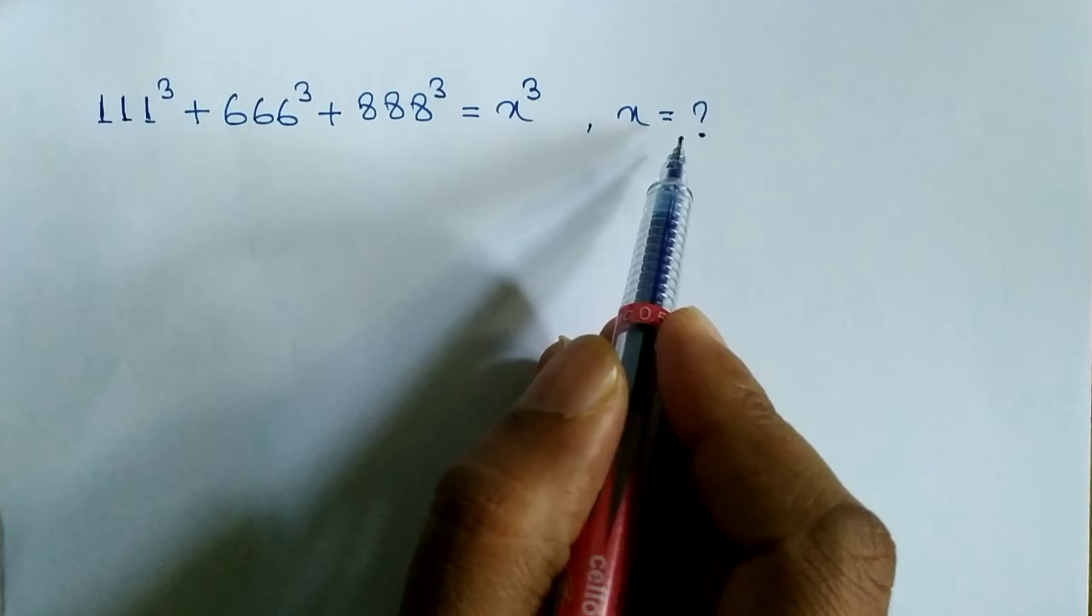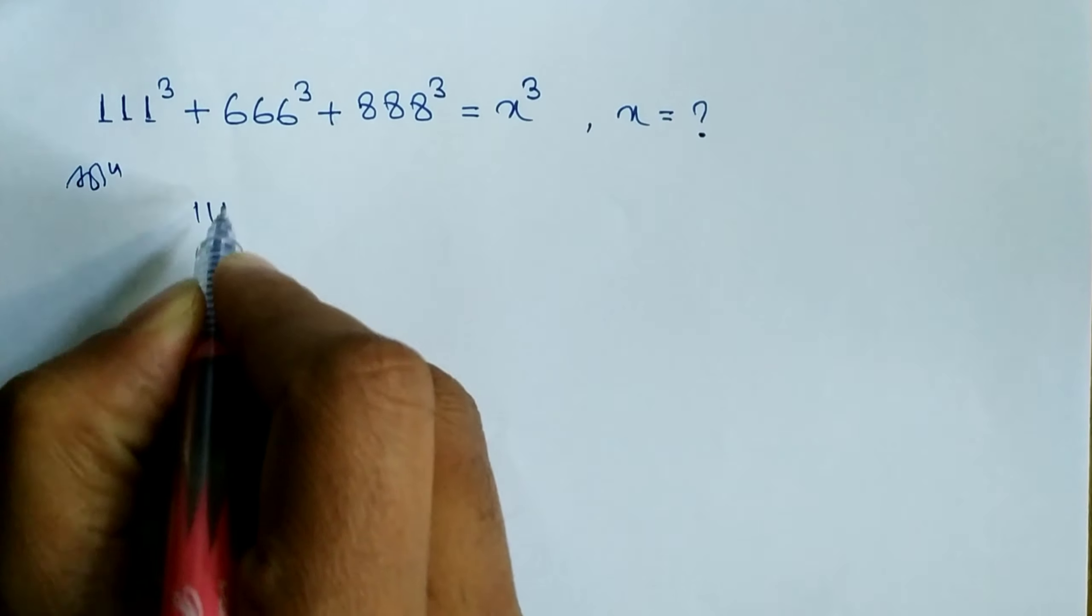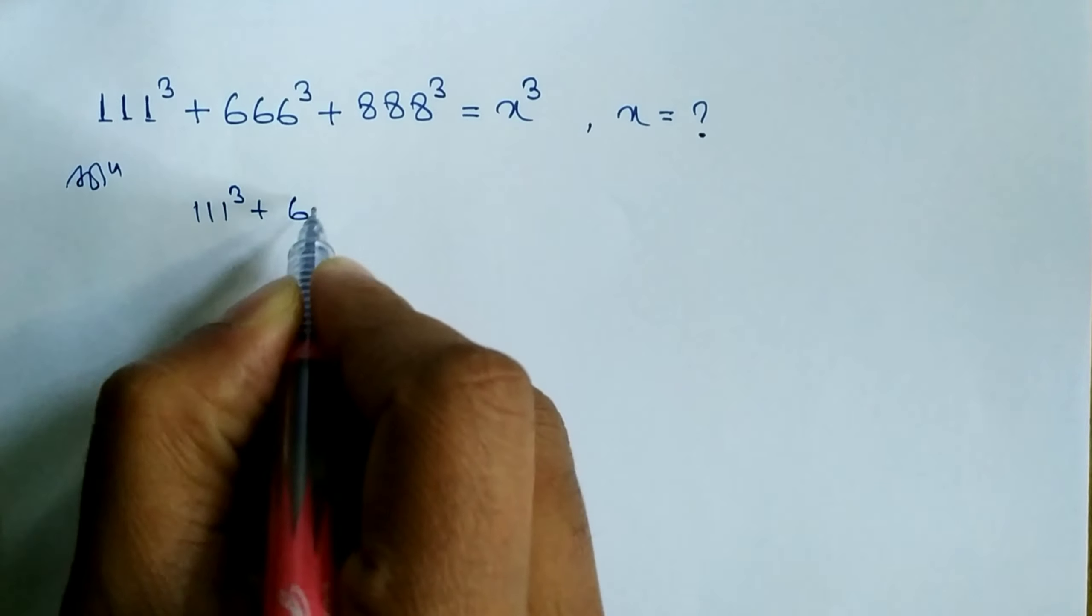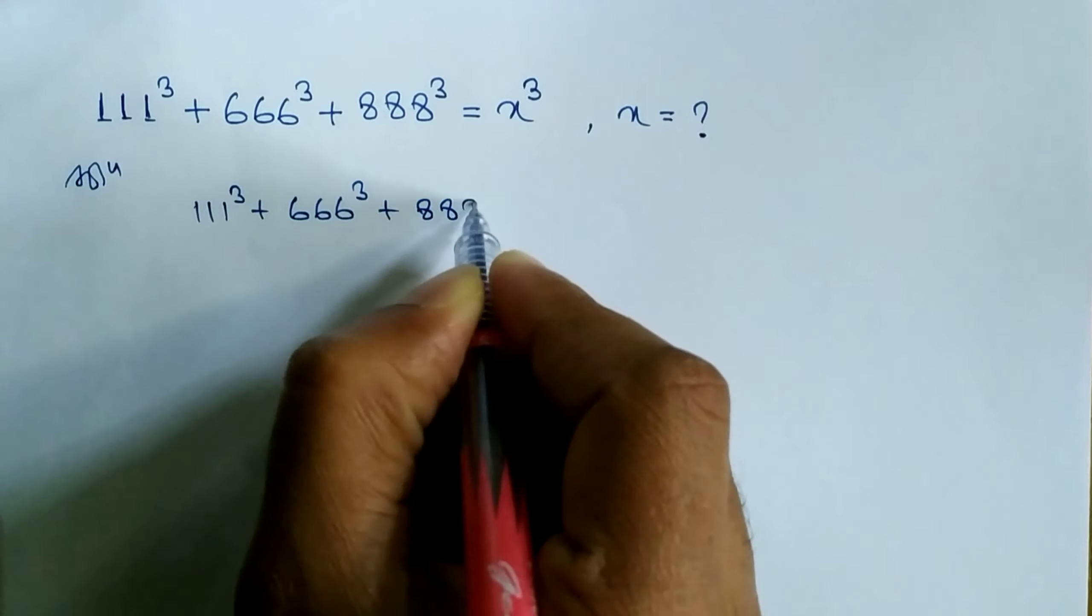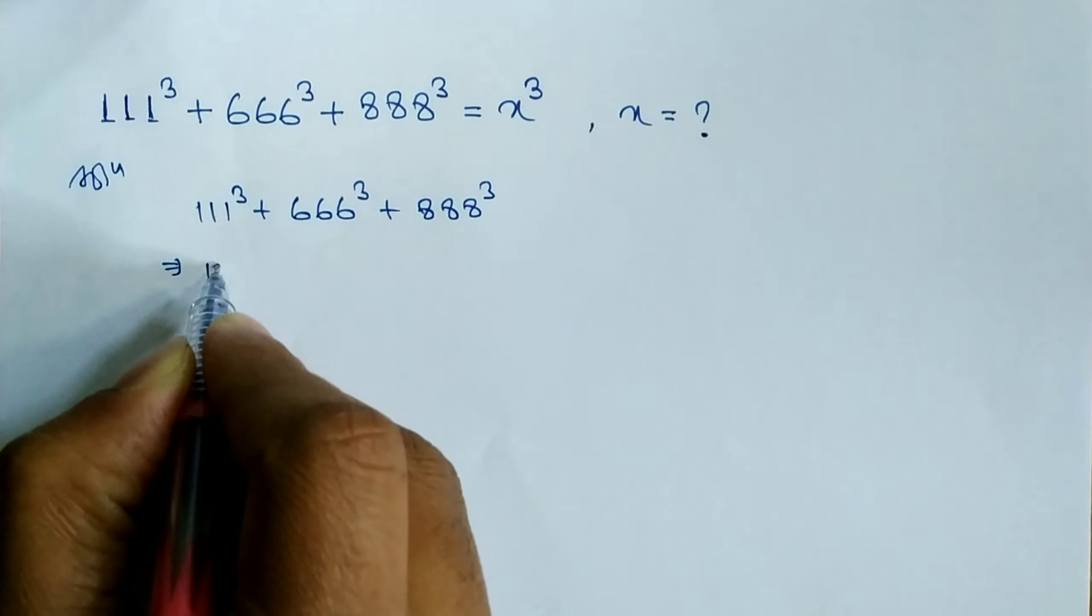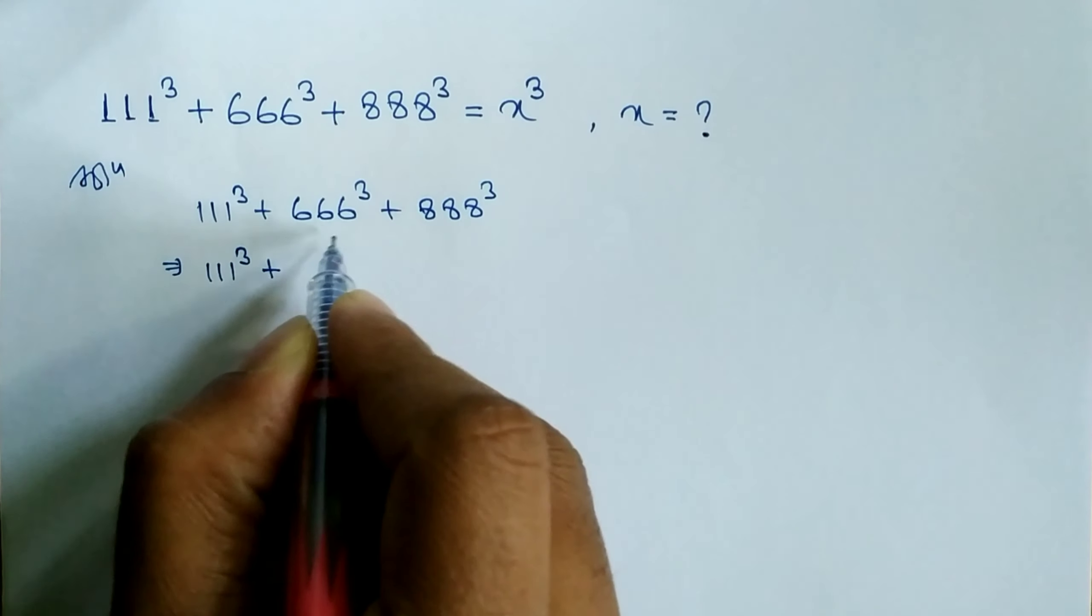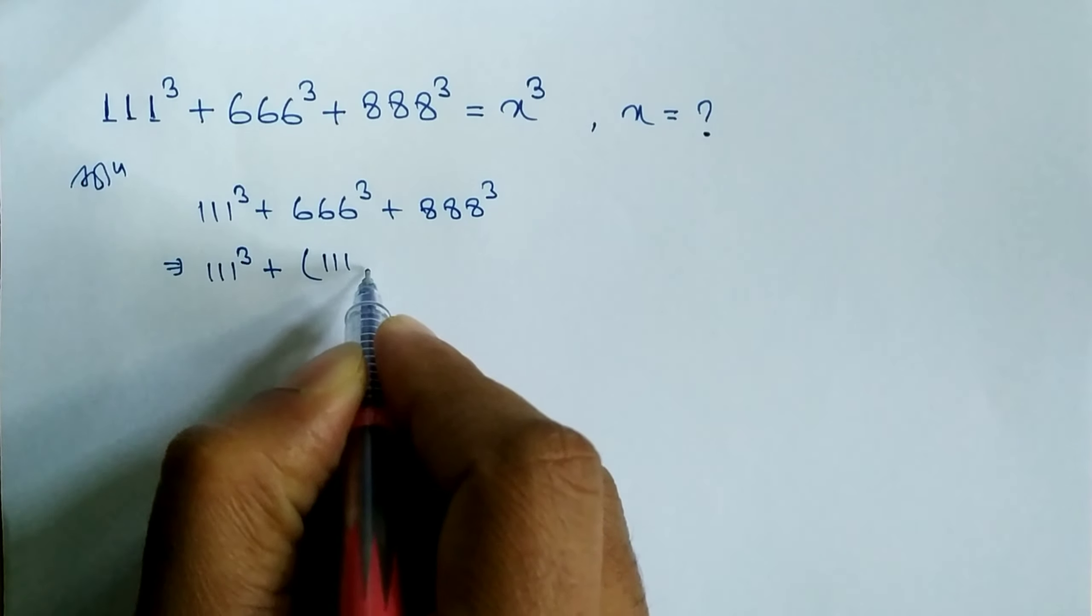111³ + 666³ + 888³. So we can write here 111³ plus this 666 we can write as 111 × 6, raised to power 3.